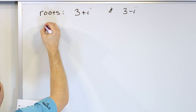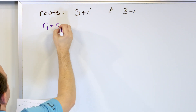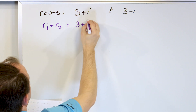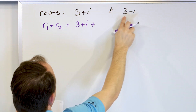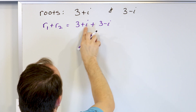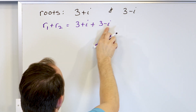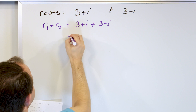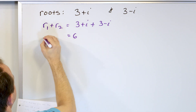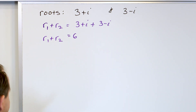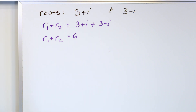We're going to find the sum of the roots first: r1 plus r2 is (3 plus i) plus (3 minus i). The i and the negative i cancel, so all you have is 3 plus 3, which is 6. So r1 plus r2 equals 6.